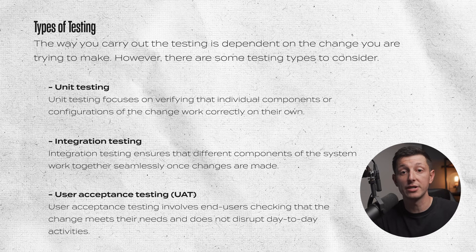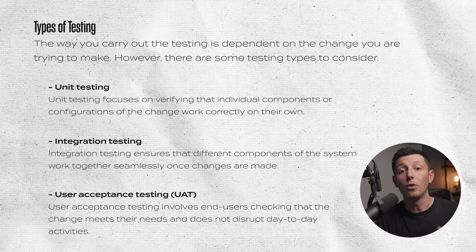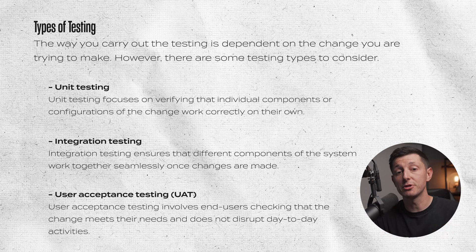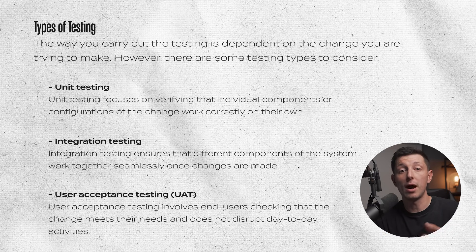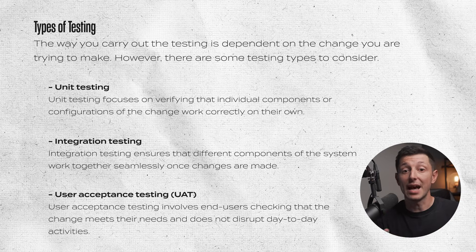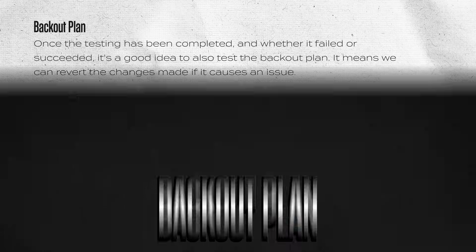User acceptance testing involves end users checking that the change meets their needs and does not disturb their day-to-day activities. For example, having a group of users test access to critical applications after the firewall change to make sure their experience is unaffected. For the testing environment, it's important to have a dedicated testing lab that replicates or is similar to the production setup — it could be a virtual environment or real hardware — allowing for realistic testing conditions and more accurate results.